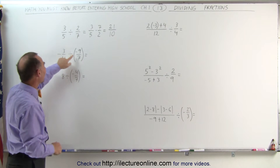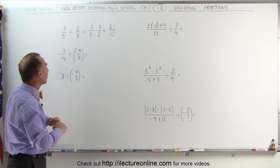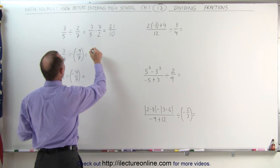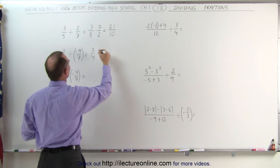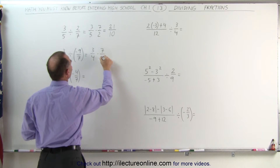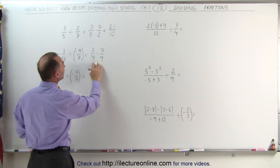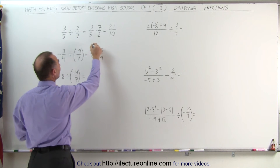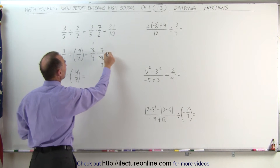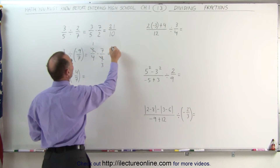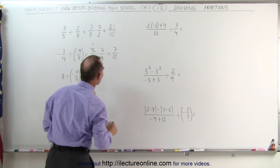Since there are two negative signs here, the answer will be positive — we can ignore the negative signs. We can now write this as 3 divided by 4, multiplied by the inverse of that fraction, which is 7 divided by 9. Notice that 3 and 9 can both be divided by 3: 3 divided by 3 is 1, and 9 divided by 3 is 3. This becomes 1 times 7 in the numerator, divided by 4 times 3, which is 12 in the denominator.